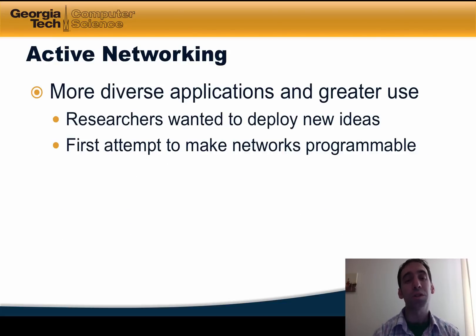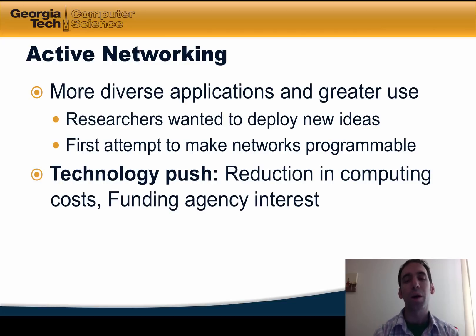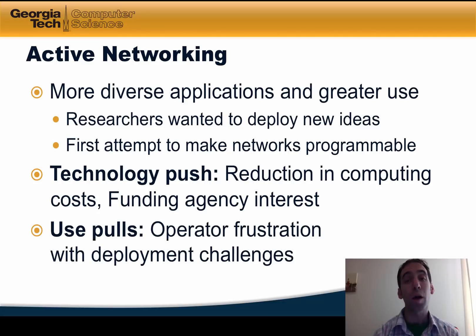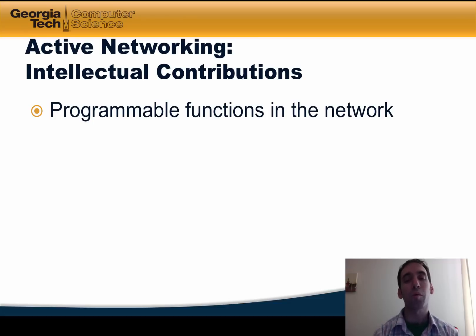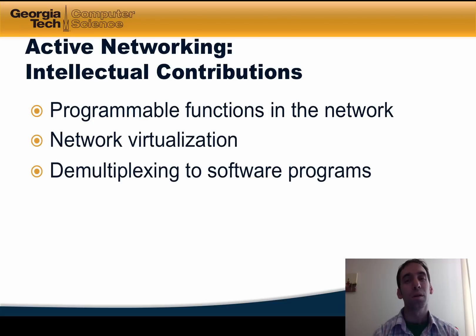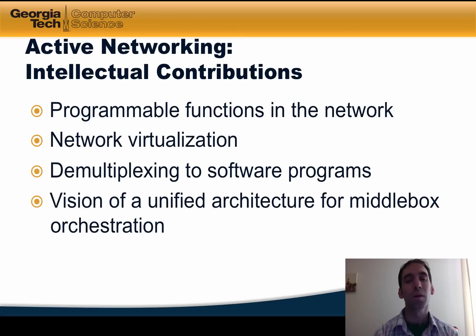Active networking came at a time when the internet was seeing much more diverse applications and increasing use. Researchers wanted to deploy new ideas, and active networking was the first attempt to make networks programmable. It was pushed by a reduction in computing costs, as well as much interest from funding agencies. Network operators were frustrated with the difficulty in deploying new technologies in the network. The intellectual contributions of active networking included the notion of programmable functions in the network, network virtualization, and the ability to have a packet demultiplex into software programs sitting on routers and switches. Although it was never realized, active networking offered a vision of a unified architecture for middlebox orchestration, which we're now seeing come to fruition in technologies such as NFV, or network functions virtualization.